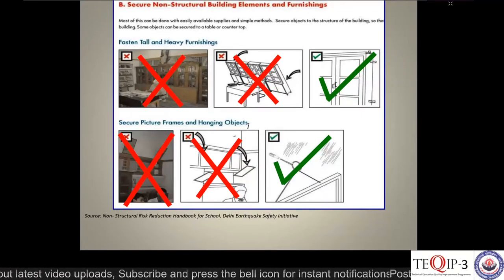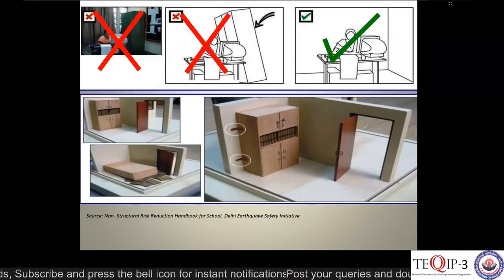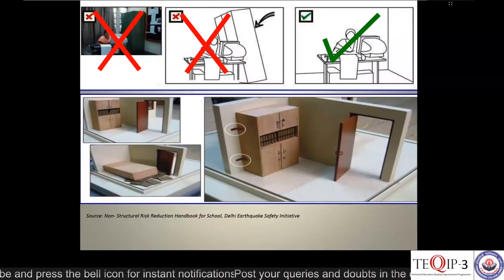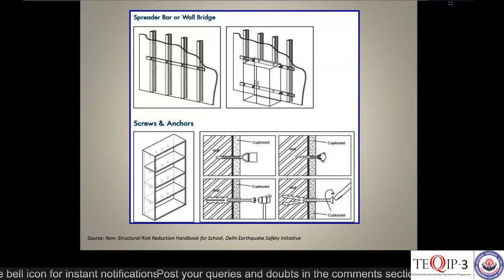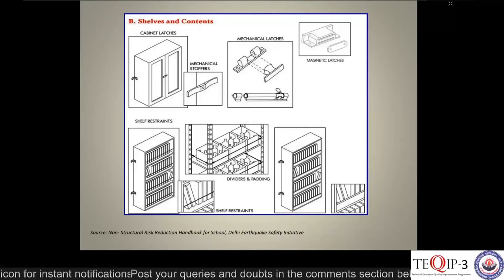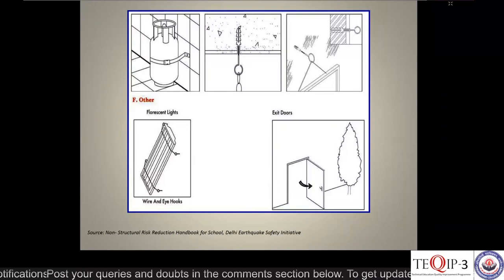Further examples to prevent vulnerable non-structural items from falling: an almira placed near a wall is at risk of falling in case of a wall collapse — anchorage to the wall is the solution, as shown in the bottom-right image. Gas cylinders should be anchored or placed in a closed cabinet. Geysers should have flexible connections.